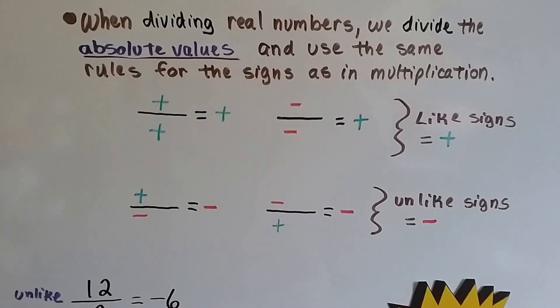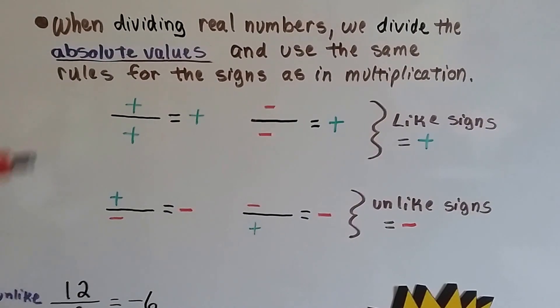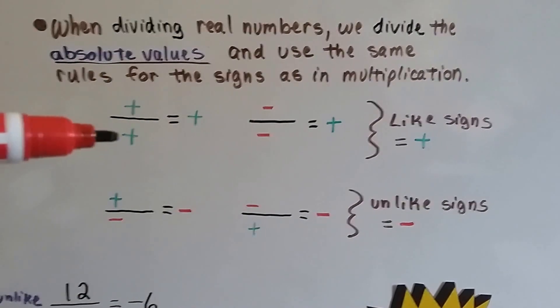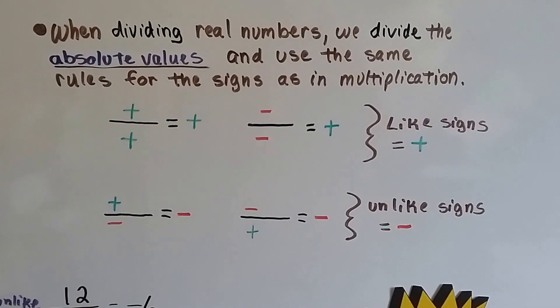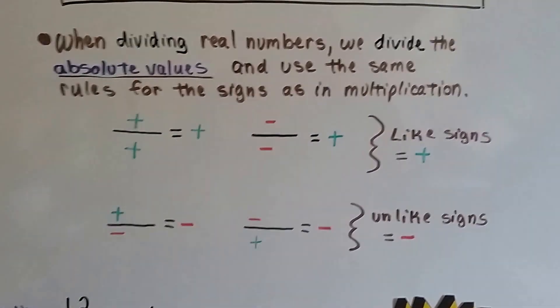When dividing real numbers, we divide the absolute values, and we use the same rules for the signs as in multiplication. If we have a positive over a positive, that's going to make a positive. If we have a negative over a negative, those are like signs, so we still get a positive.